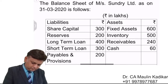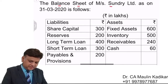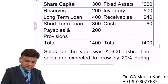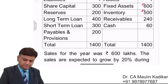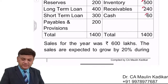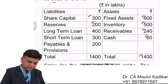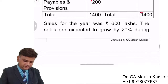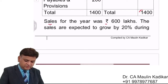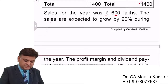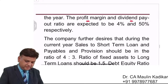The balance sheet of Mrs. S Limited as on 31st March 2020 is as follows: fixed assets 600 lakhs, stock 500 lakhs, debtors 240 lakhs, cash balance 60 lakhs, total assets 1400 lakhs. Share capital, reserves, long-term loan, short-term loan, payable and provisions are given. Sales for the year were 600 lakhs, expected to grow by 20%. Profit margin and dividend payout ratio are expected to be 4% and 50% respectively.